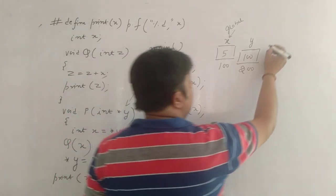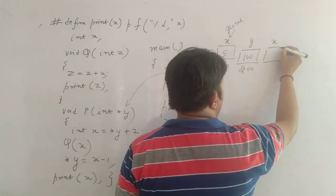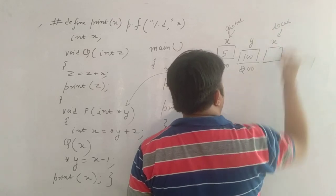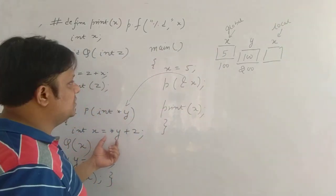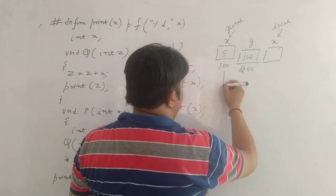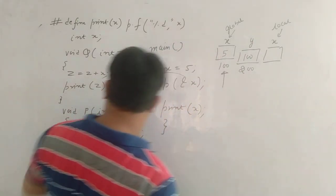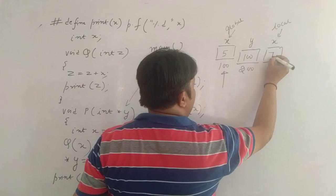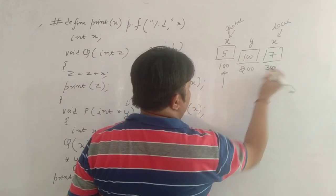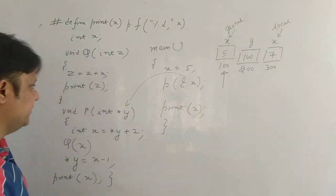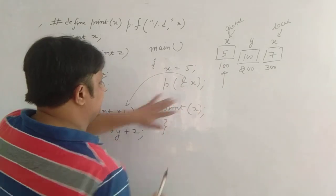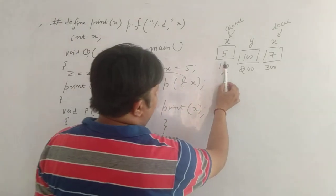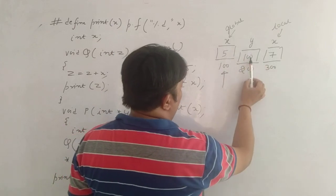This x is a local x, right? It is local to this function. Index is equal to star y. The value of y is 100, and star of this is 5. So 5 plus 2 is 7. Therefore, the value of this x is 7. Let's suppose the address is 300. We are passing the address of x and this address of x is getting stored in variable y. So address of x is 100, so value of y is 100.